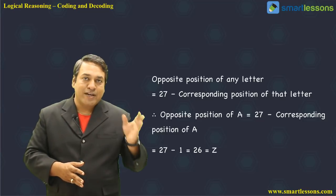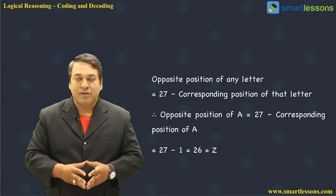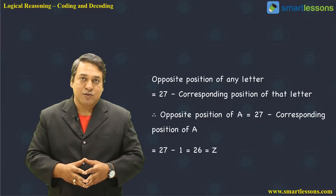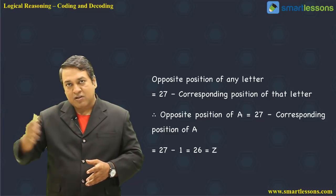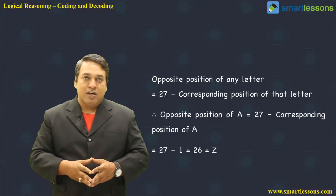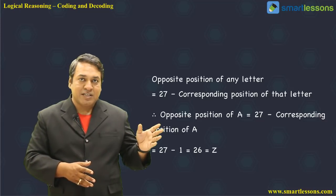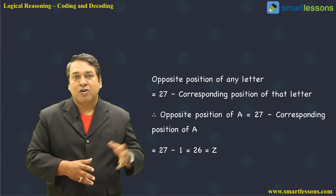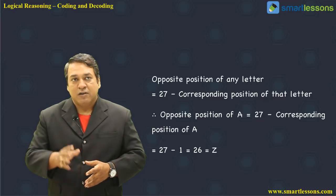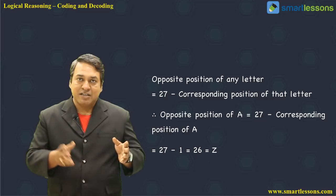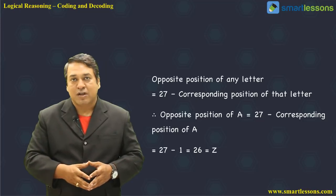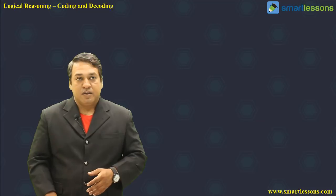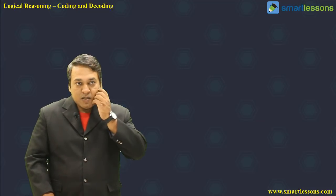Similarly, B is 2; its opposite on the other extreme is Y. So 27 minus 2 gives 25, which is the number for Y. We get the opposite letter by subtracting the number corresponding to the given alphabet from 27.